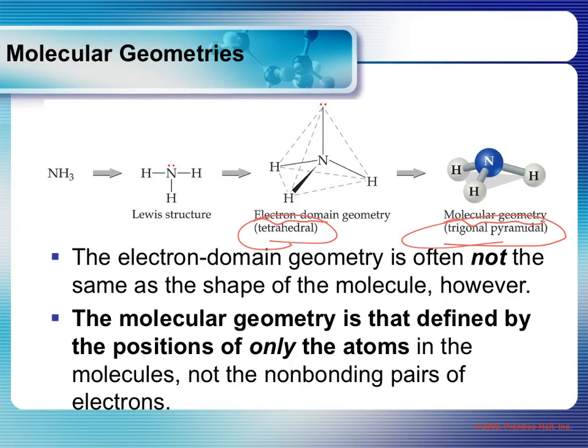This is where it gets more complicated, and you definitely should wait until you're at your best and able to pay attention with a clear mind. Otherwise you may want to put this on pause and come back to it. Because every electron domain geometry has multiple molecular geometries, depending on how many lone pairs are around the central atom.